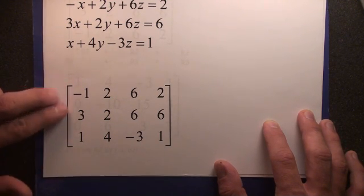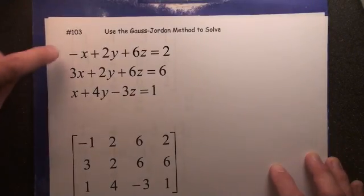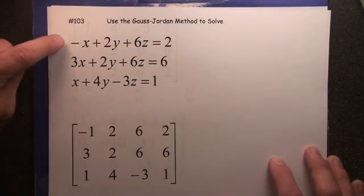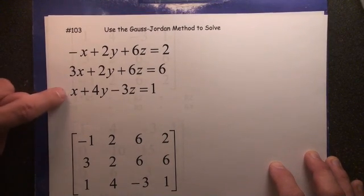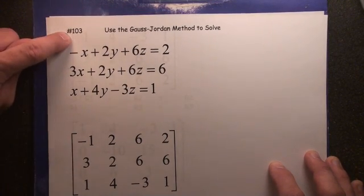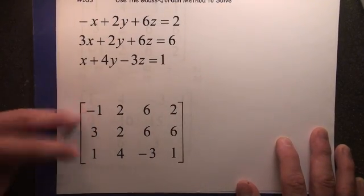Now, each one of these rows represents an equation. Does it matter that this is called equation 1 and this is equation 2 and this is equation 3? No. You can put equation 3 on the top. That's what we're going to do. We're going to reverse 1 and 3 around.